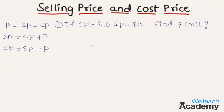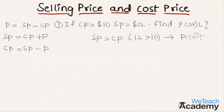Let us solve an example to understand this concept. If cost price is $10 and selling price is $12, we have to find the profit or loss. We can observe that the selling price is greater than the cost price, so there is a profit. By substituting in the formula — Profit = Selling Price minus Cost Price — we get $12 minus $10, so the profit is $2.